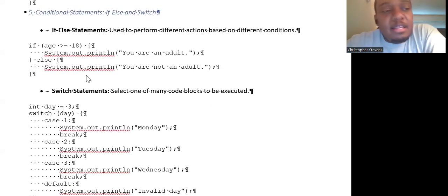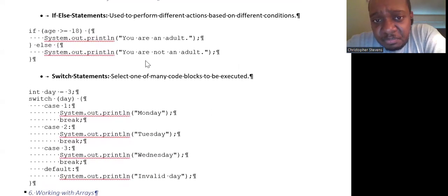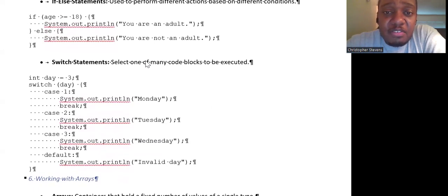We did look at some decision structures, so we had our conditional statements, which is like our if, else, and else if statements. If the thing is true, then do this. Else, if the thing is true, do this, and keep going until you get to the end. Else, otherwise, do this. So that's how you perform different actions based on the conditions.